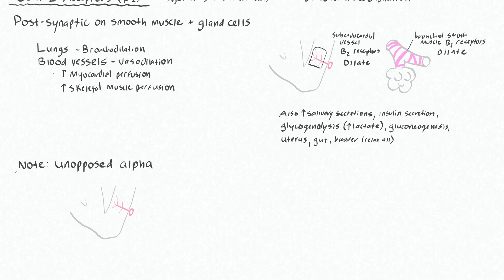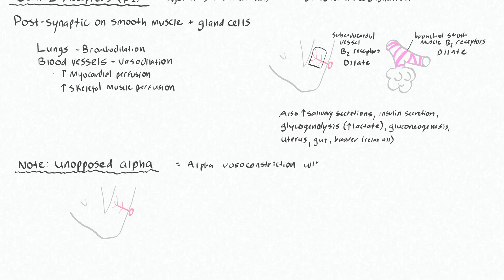I'll finish by making a note about the concept of unopposed alpha, which is what happens when you have alpha-1 agonism — vasoconstriction — without the beta-2 dilation to go along with it. Usually with our endogenous catecholamines, they'll have both alpha and beta activity. But in theory, if we take away this beta dilation, we'll be left only with vasoconstriction.